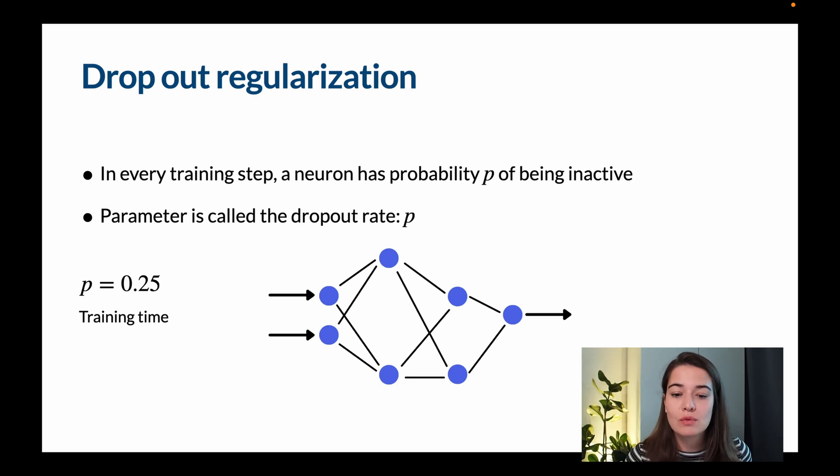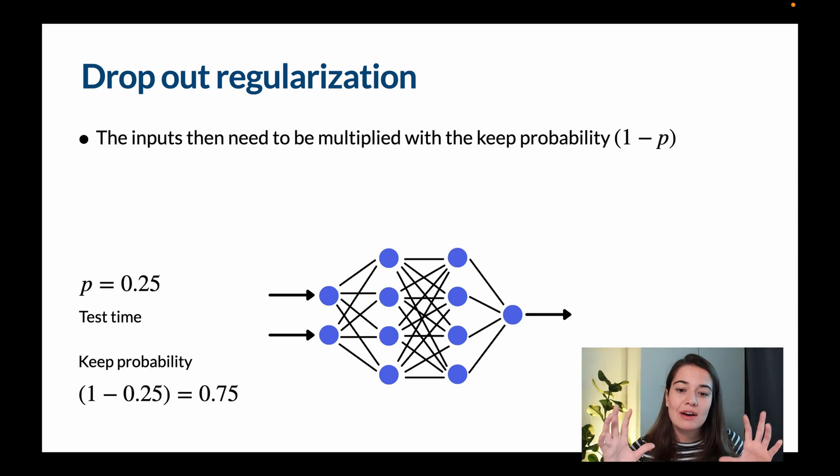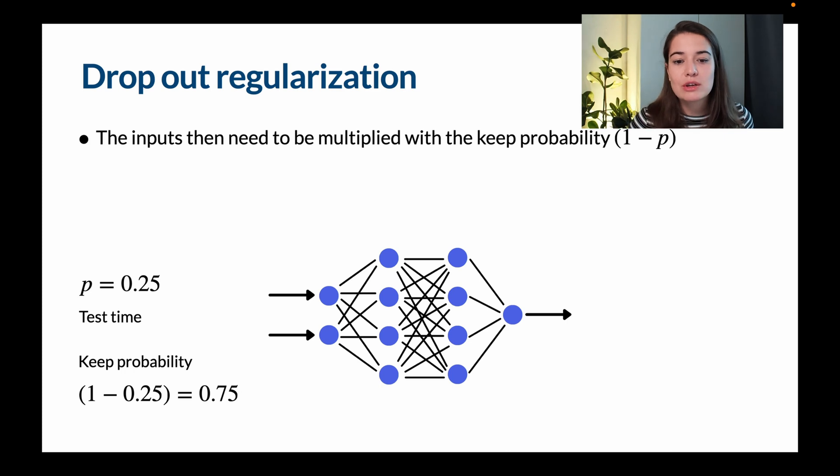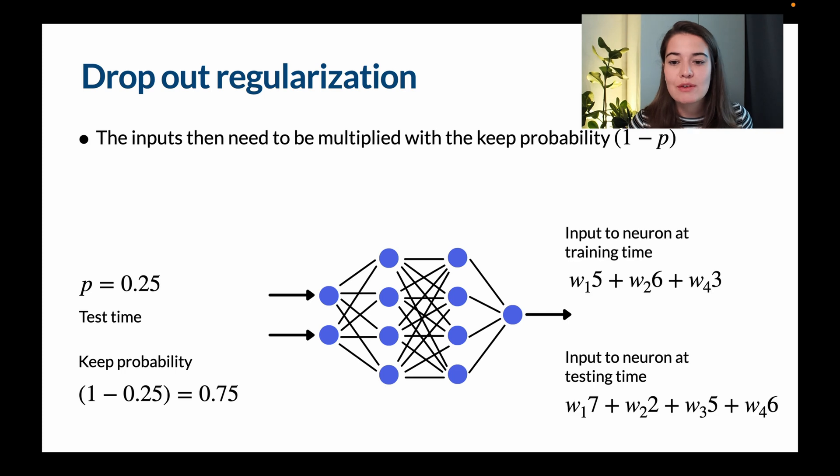And one little trick here, one little thing that you need to understand about dropout regularization is that when you're training, some nodes or some neurons are going to be missing, but when you're testing, they're not going to be missing. So as a result, what you need to do is to use something called the keep probability, which is one minus the dropout rate. And you need to multiply your inputs with this keep probability.